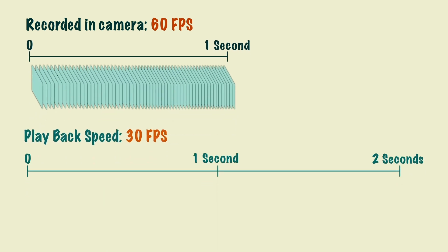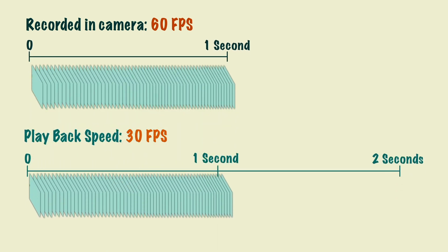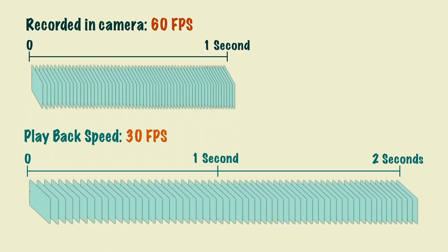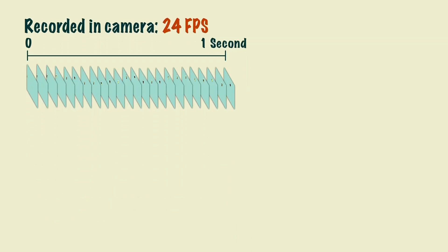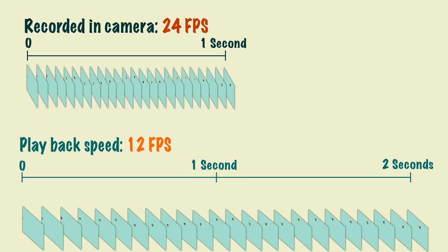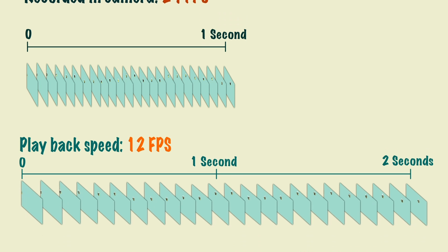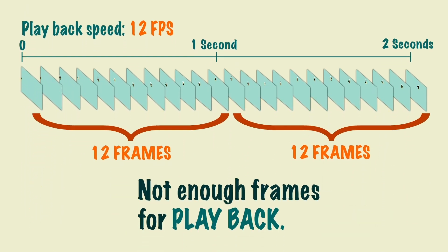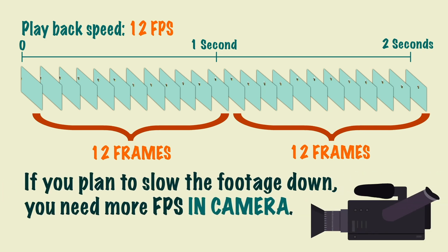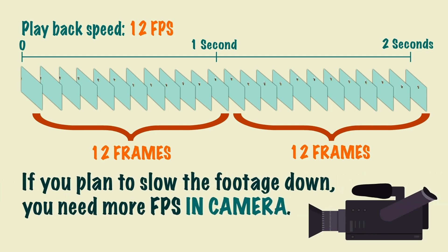High frame rates can also be used to slow the footage down in the edit. If you captured 24 frames per second in camera and slowed this down to playback over two seconds in the edit, there wouldn't be enough frames to make the image look natural and smooth in playback. Therefore, if you plan to slow the footage down, you need to have the appropriate amount of frames per second captured in camera.